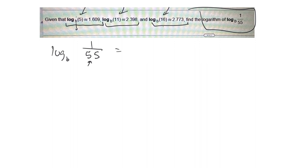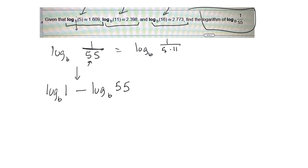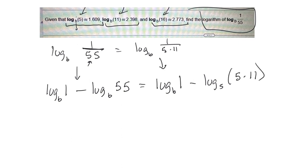So this is the same as log base b of 1 over (5 times 11). I could split it like that, but maybe I'll just use the quotient rule to begin with. So that gives me log base b of 1 minus log base b of 55. This is the same as log base b of 1 minus log base b of (5 times 11).